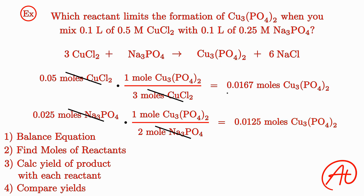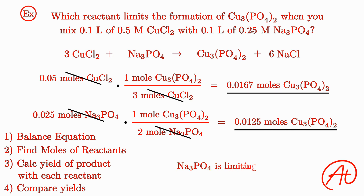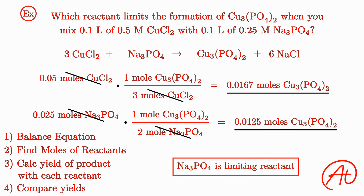Comparing these two yields, we find that our limiting reactant is sodium phosphate. With the amounts we have of each reactant, sodium phosphate is going to cause the reaction to stop first, and we're only going to be able to create 0.0125 moles of copper phosphate.